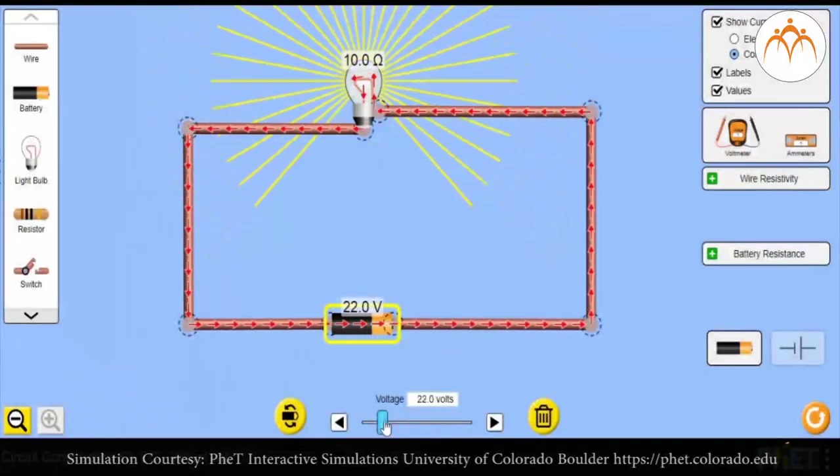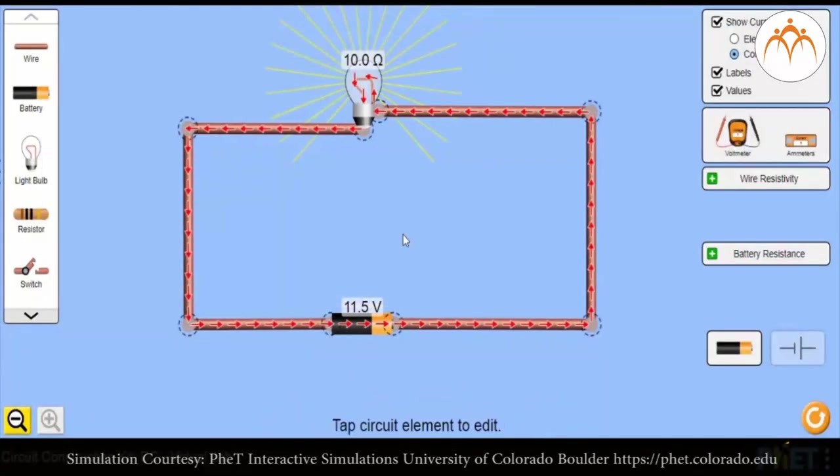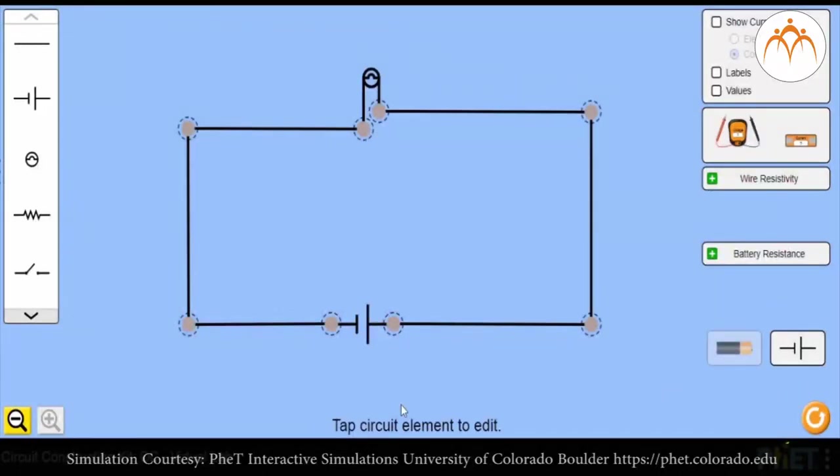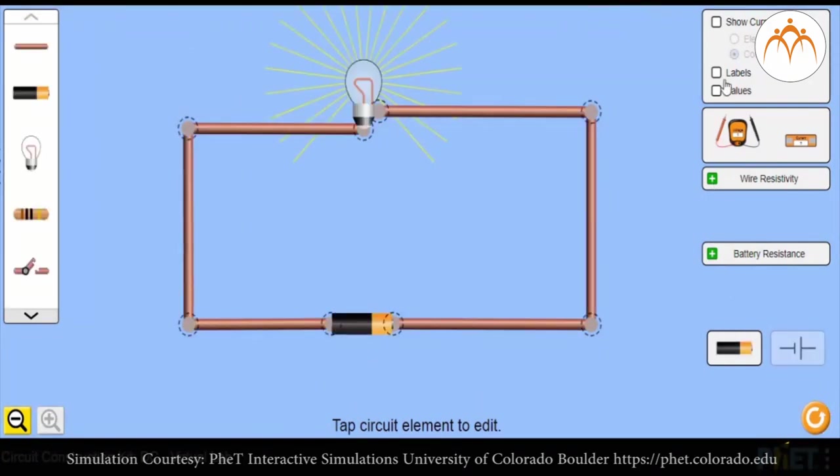The flow of electrons is termed electron current. Electrons flow from the negative terminal to positive. Conventional current, or simple current, behaves as if positive charge causes current flow. Conventional current flows from the positive terminal to negative. For our simulation, we will use conventional current notation.